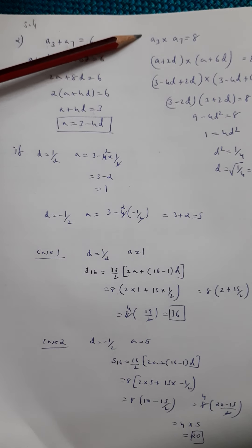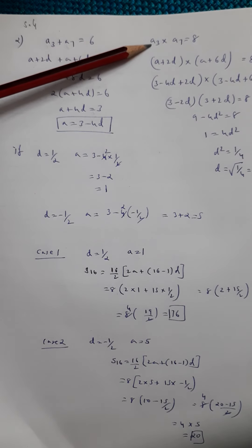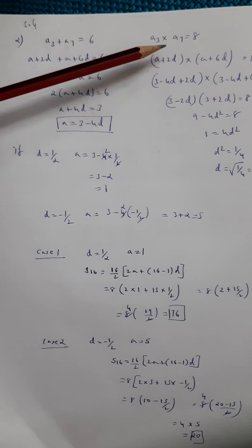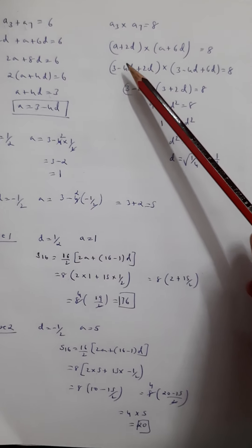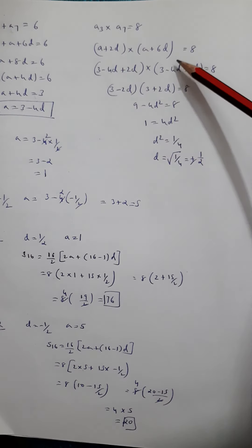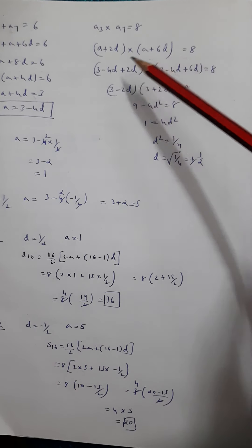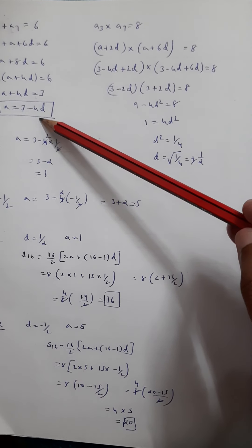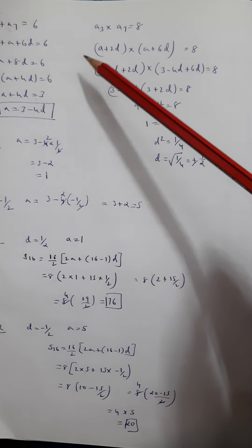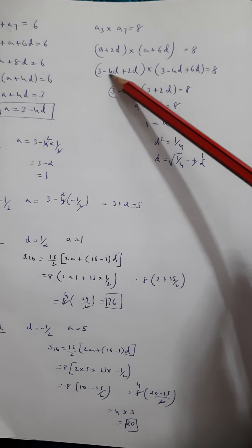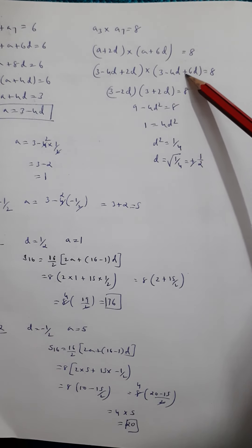The second condition given is that the product of the third and seventh term is 8. So we make another equation: the third term (a plus 2d) multiplied by the seventh term (a plus 6d) equals 8. Now I am going to substitute the value of a we already found — a equals 3 minus 4d — putting it in place of a in both factors: (3 minus 4d plus 2d) times (3 minus 4d plus 6d) equals 8.